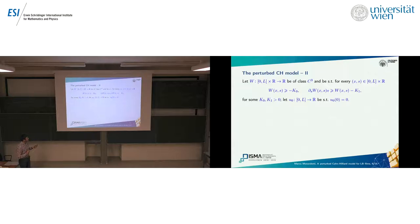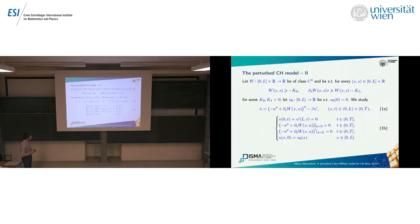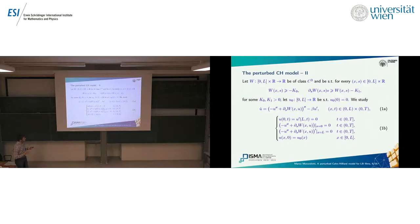What we did was to make suitable assumptions on the double-well potential: we require it to be of class C³ with boundedness from below and boundedness of the s-derivative, for some positive constants k₀ and k₁. We fix an initial condition which is zero at zero for convenience, such that the functions live in a suitable function space. The equation is exactly the same as in the previous slide.